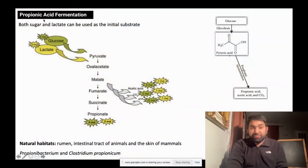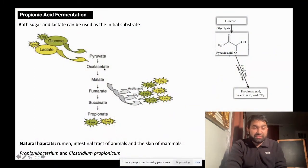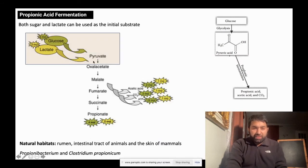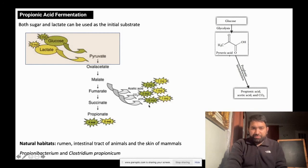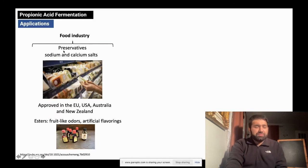Propionic acid fermentation is another form of fermentation in which both glucose and lactate can act as substrates. At the end, pyruvate is formed, and this pyruvate is then sequentially converted into propionate, along with the production of acetic acid, CO₂, and ATP.